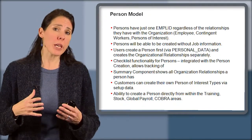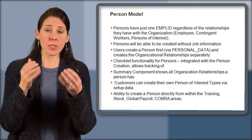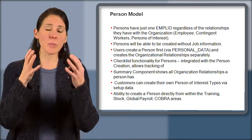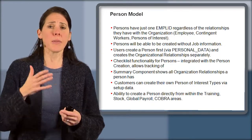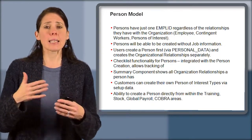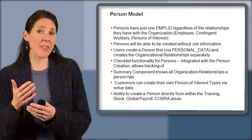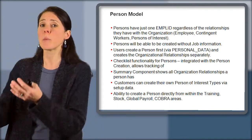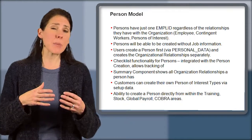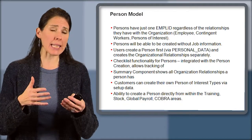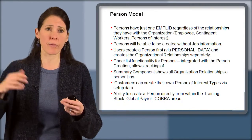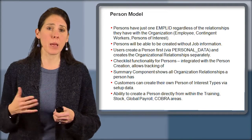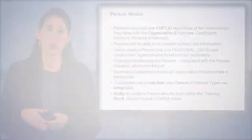So now what we can do is add a person into the system. I've added the person as a contingent worker, but then as that relationship changes, maybe I end the relationship as a contingent worker but add an employment instance. They keep the same EMPL ID, but maybe they get EMPL record 1, for example. Persons will also be able to be created without job information.